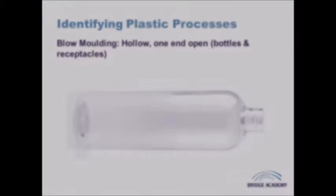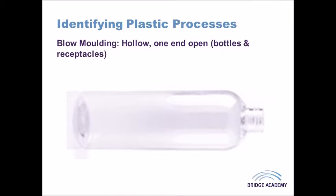Blow-molded products have hollow shapes with one end sealed while the other remains open, and they're often things like bottles or drums for holding chemicals. In blow molding, the neck of the bottle is usually smaller than the outside measurements of the body. You can also apply surface decorations such as embossed details, lettering, or textures, and screw threads can be incorporated into the neck to attach a lid.